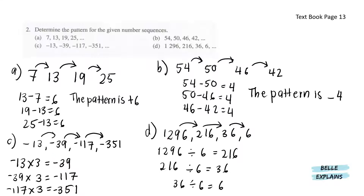Lastly, for D, we have 1296, 216, 36 and then 6. In between these numbers, there is a division operation of 6. So the pattern is divide by 6.